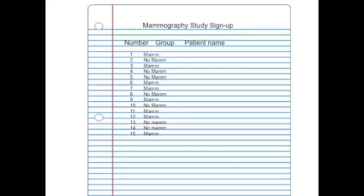Let me give you an example of how this works. Imagine we're doing a study on screening mammography. We take a group of women from our practice and enroll them into the study. Some women are going to get a mammogram and some are not. We have a list on the wall where we add names of the women as they come in. The first woman is placed in the mammogram group, the second in the no-mammogram group, and so on down the list.